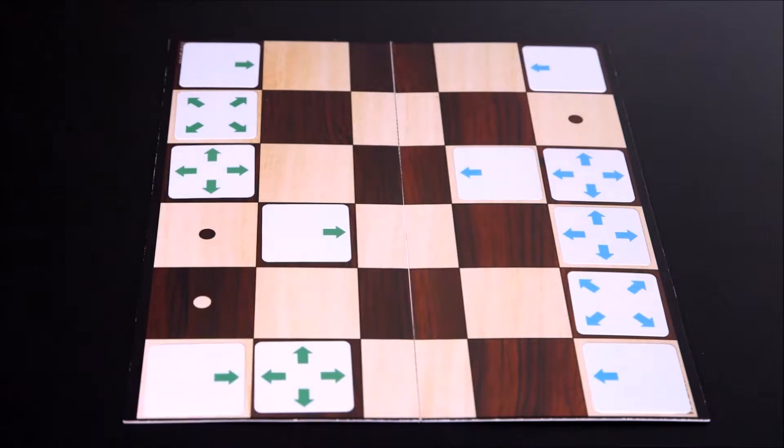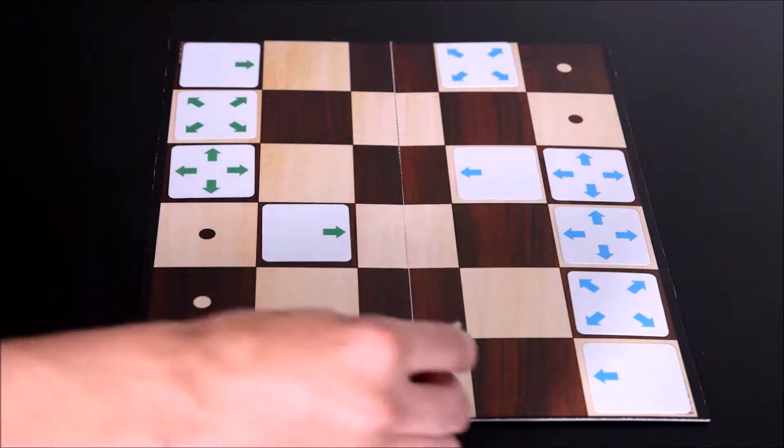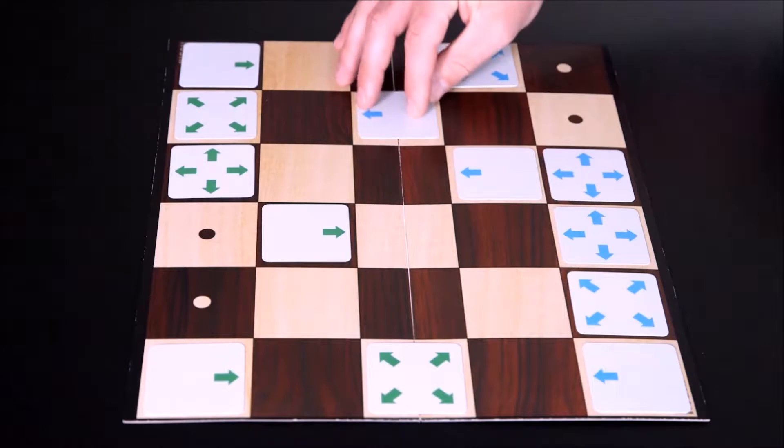Players take turns placing the card in their hand on the board, but they can only place it on squares that have an arrow pointing to them from an adjacent card.